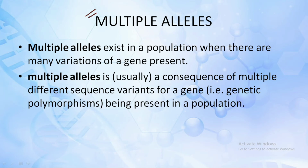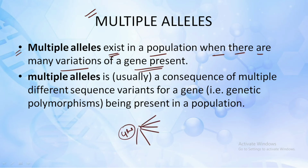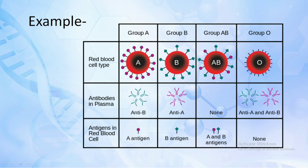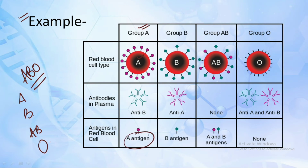Now let's understand multiple alleles. Multiple alleles exist in a population when there are many variations of a gene present. When a gene has more than two variations, they are given the name of multiple alleles. Multiple alleles are usually a consequence of multiple different sequence variants for a gene — genetic polymorphism — being present in the population. The most common example is ABO blood grouping. We have blood groups A, B, AB, and O. Blood group A has antigen A on red blood cells with anti-B antibodies.